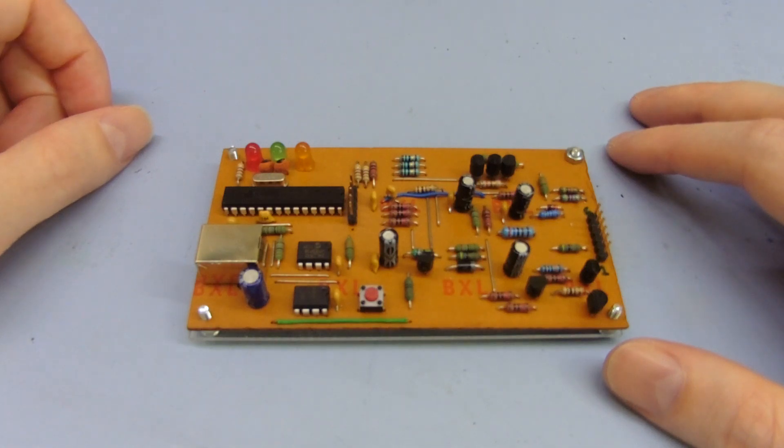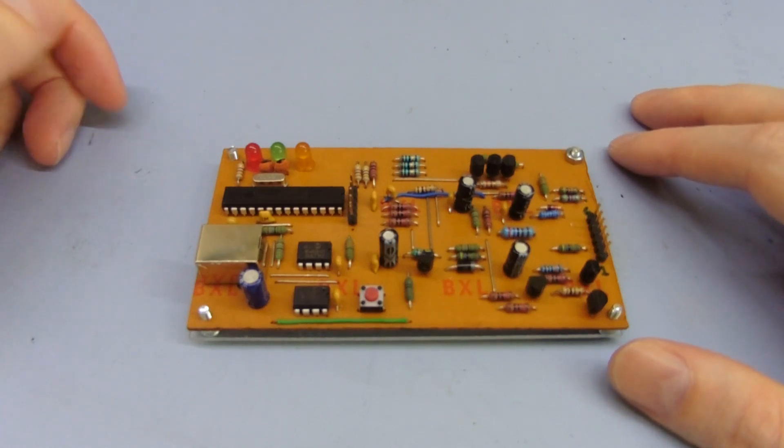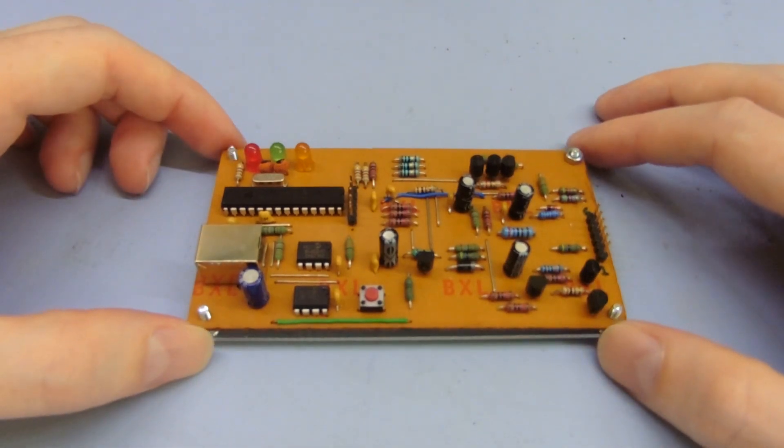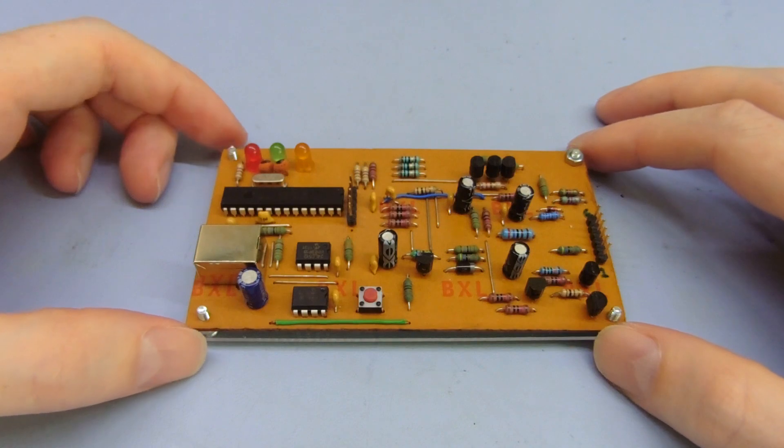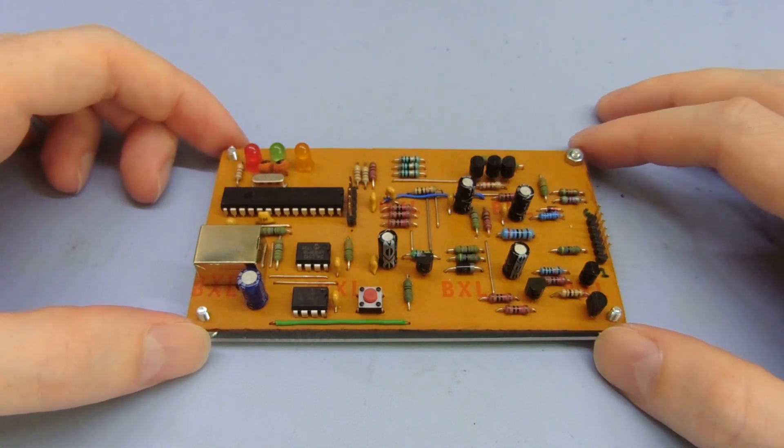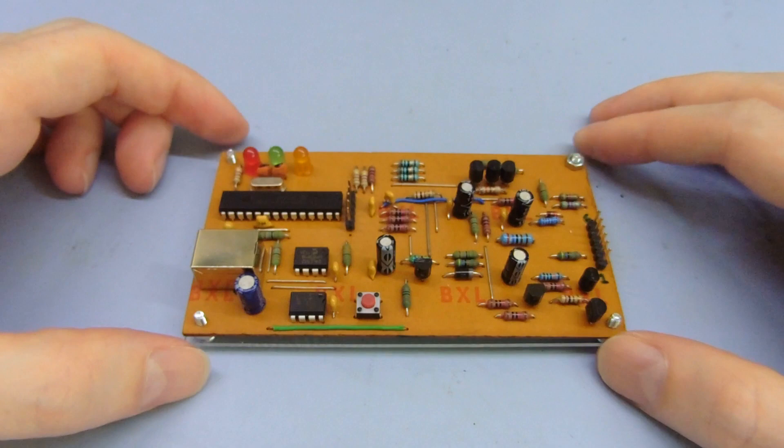I want to build this soldering iron controller to allow me to use the T12 handle and cartridge style tips, because I want a more powerful soldering iron with tips that are a bit larger than the ones in a Hacko 936 style, which is what I have. To program the microcontroller that runs the soldering station, I needed to build this programmer.